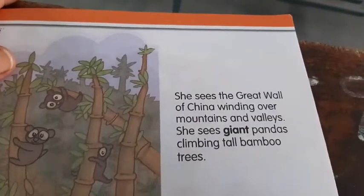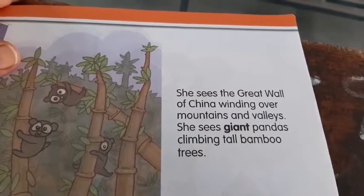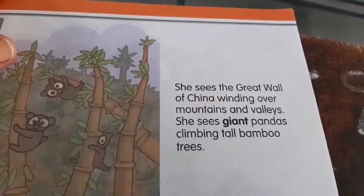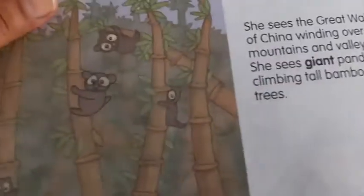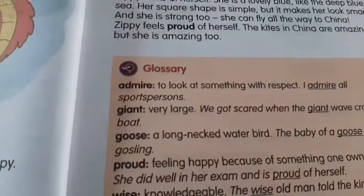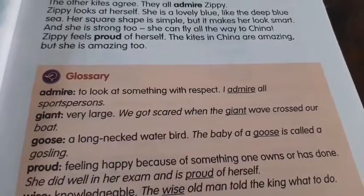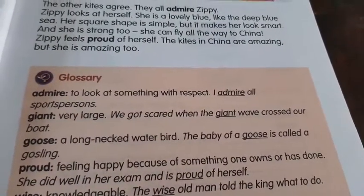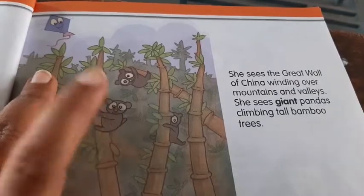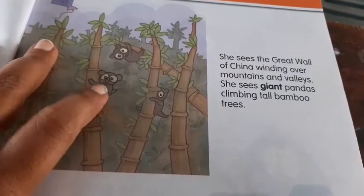She sees the great wall of China winding over mountains and valleys. She sees giant pandas climbing a bamboo tree. What is the meaning of giant? Very large. We got scared when the giant wave crossed our boat. Giant means very big. What is Zippy seeing while flying? Big pandas — you know Kung Fu pandas — climbing a bamboo tree.